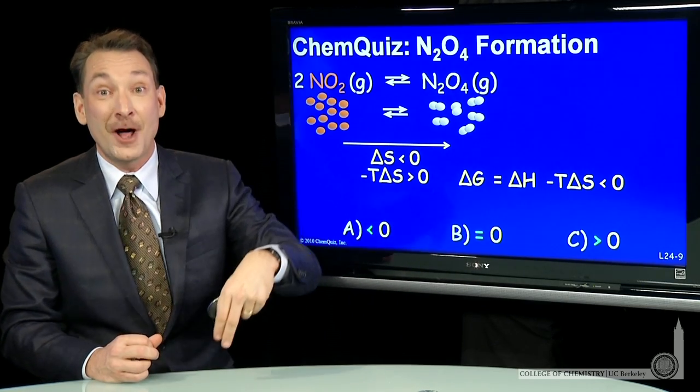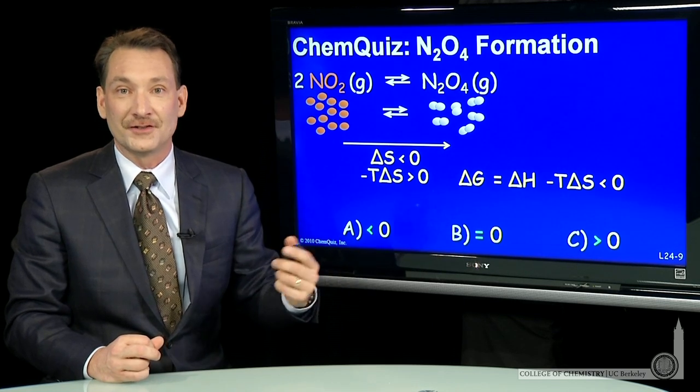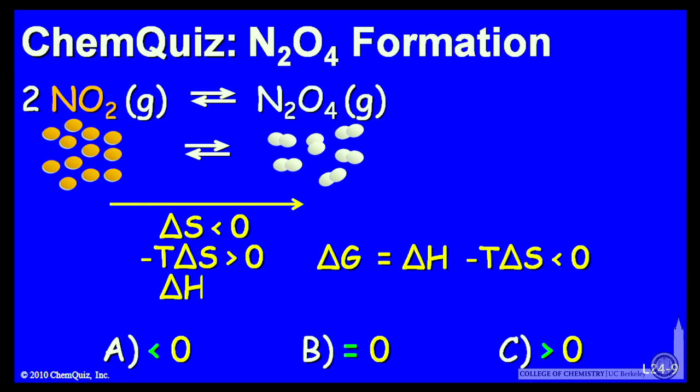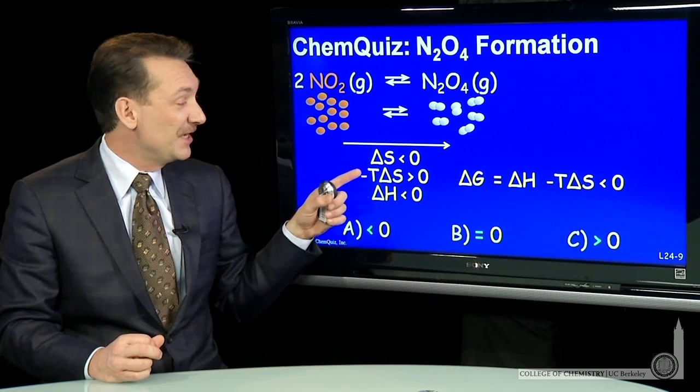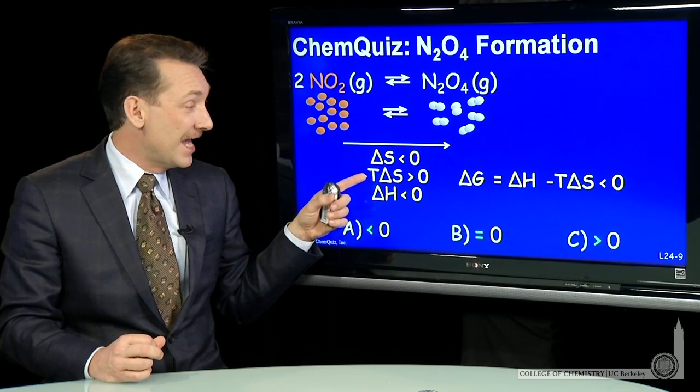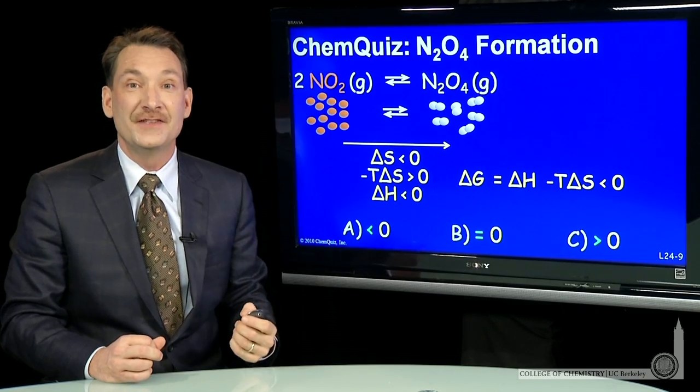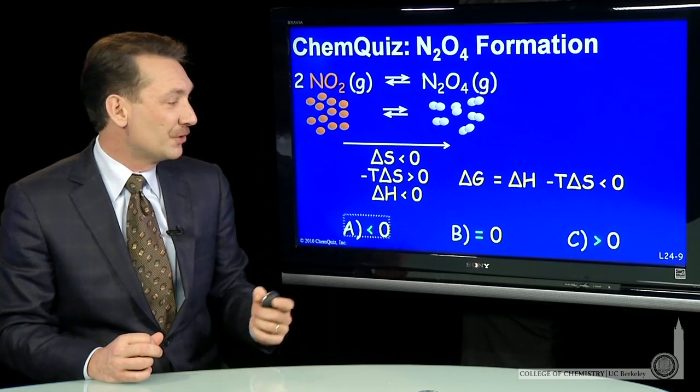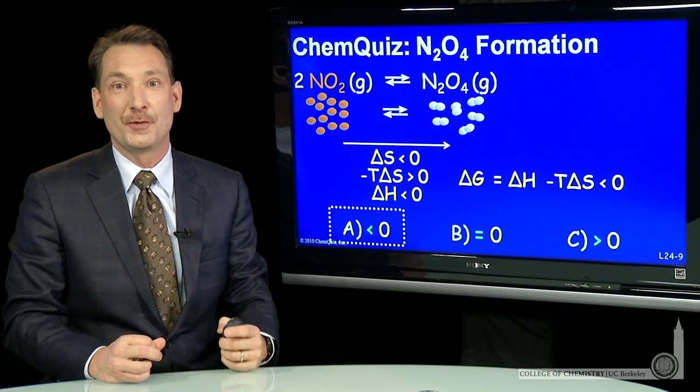So we have to have an enthalpic contribution that's negative. That's the only thing that can make delta G negative. So delta H must be less than 0. This must be an exothermic reaction in order for it to be spontaneous, and that exothermic contribution must be greater than the entropic temperature contribution for an overall negative delta G. So in this case, delta H less than 0 is the appropriate answer.